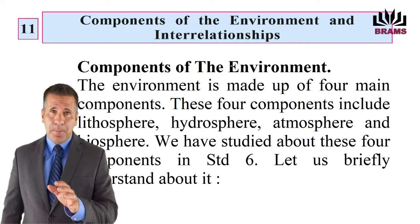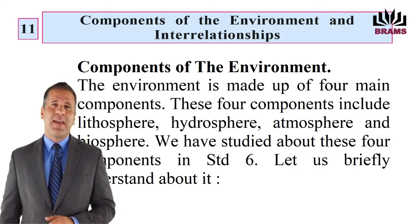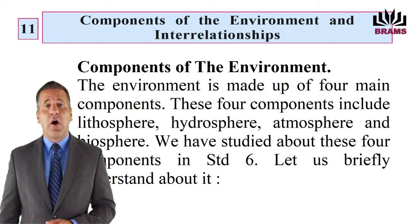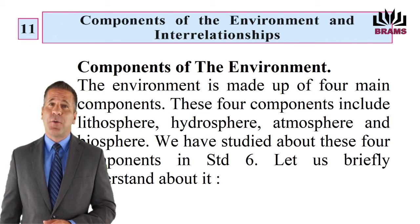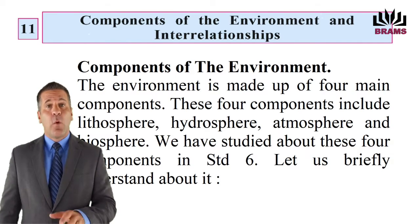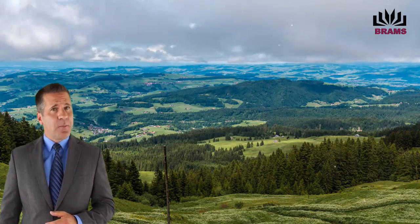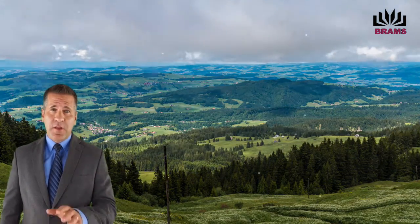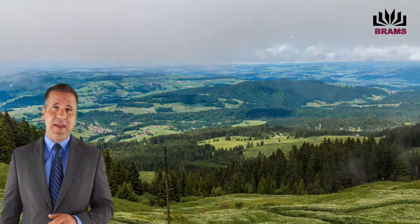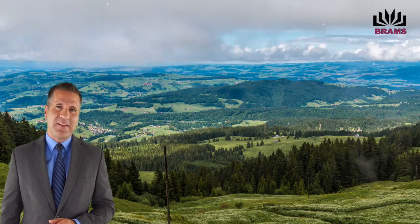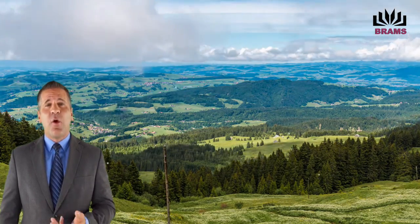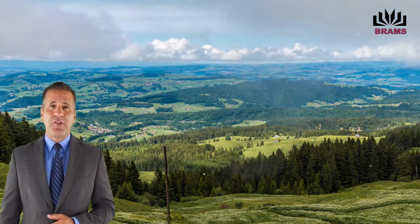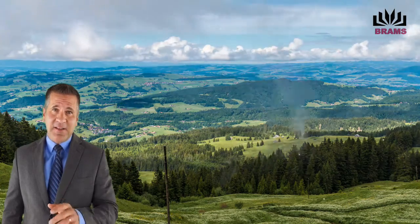Components of the Environment: The environment is made up of four main components — lithosphere, hydrosphere, atmosphere and biosphere. We have studied about these four components in STD-6; let us briefly understand about them. पर्यावरण मुख्यतः 4 घटकों का बना है — मृदावरण, जलावरण, वातावरण और जीवावरण। इन चार आवरणों के विषय में कक्षा 6 में अध्ययन किया था; हम इनके विषय में संक्षिप्त में समझेंगे।